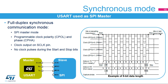The USART can also communicate synchronously. It can operate as an SPI in master mode with programmable clock polarity, or CPOL, and phase, or CPHA. The clock is output on the SCLK pin. No clock pulses are provided during the start and stop bits.